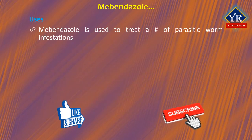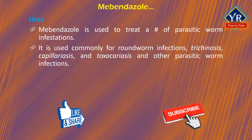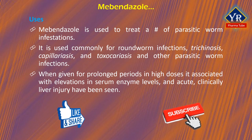Mebendazole is a medication used to treat a number of parasitic worm infestations. It is an anthelmintic agent used commonly for roundworm infections, trichinosis, capillariasis, and toxocariasis, and other parasitic worm infections. When given for prolonged periods in high doses, mebendazole has been associated with elevations in serum enzyme levels, and rare instances of acute clinically apparent liver injury have been linked to its use.